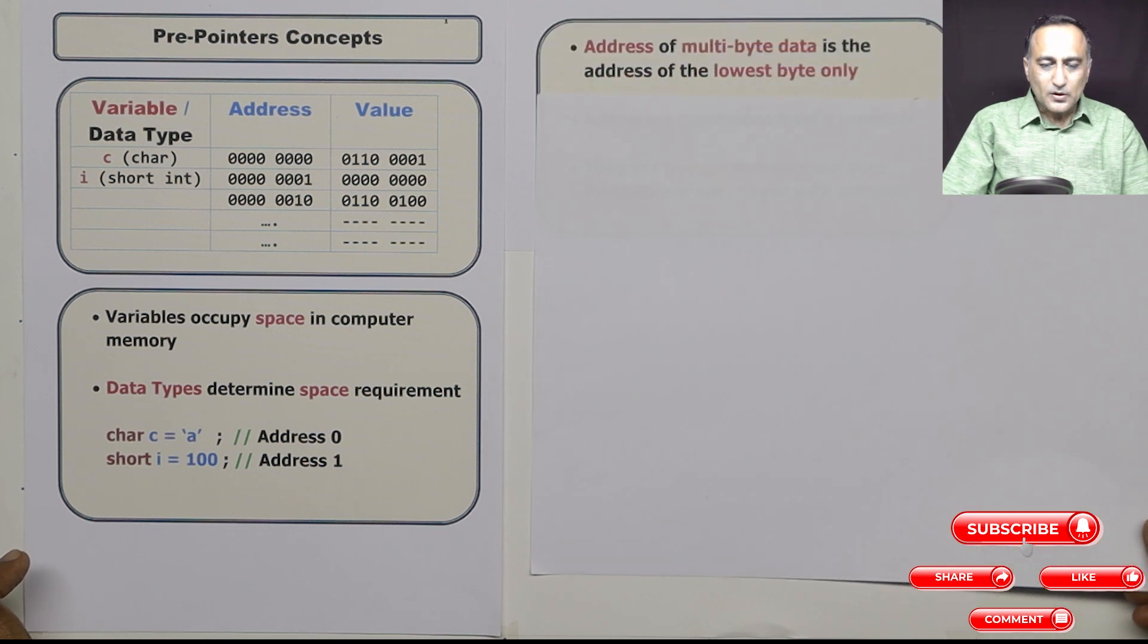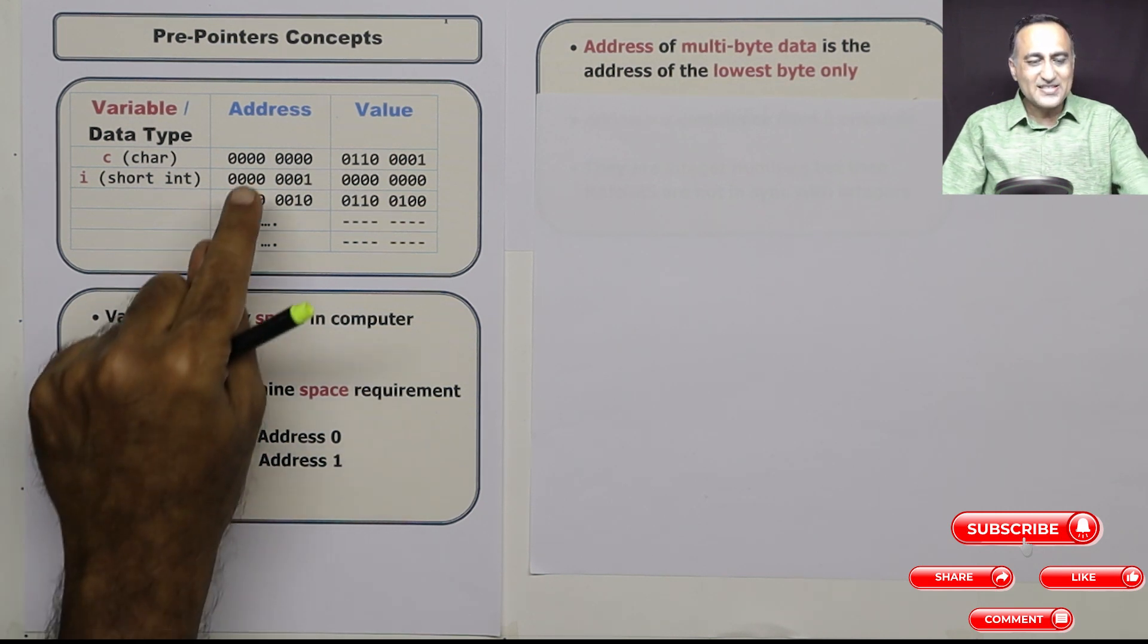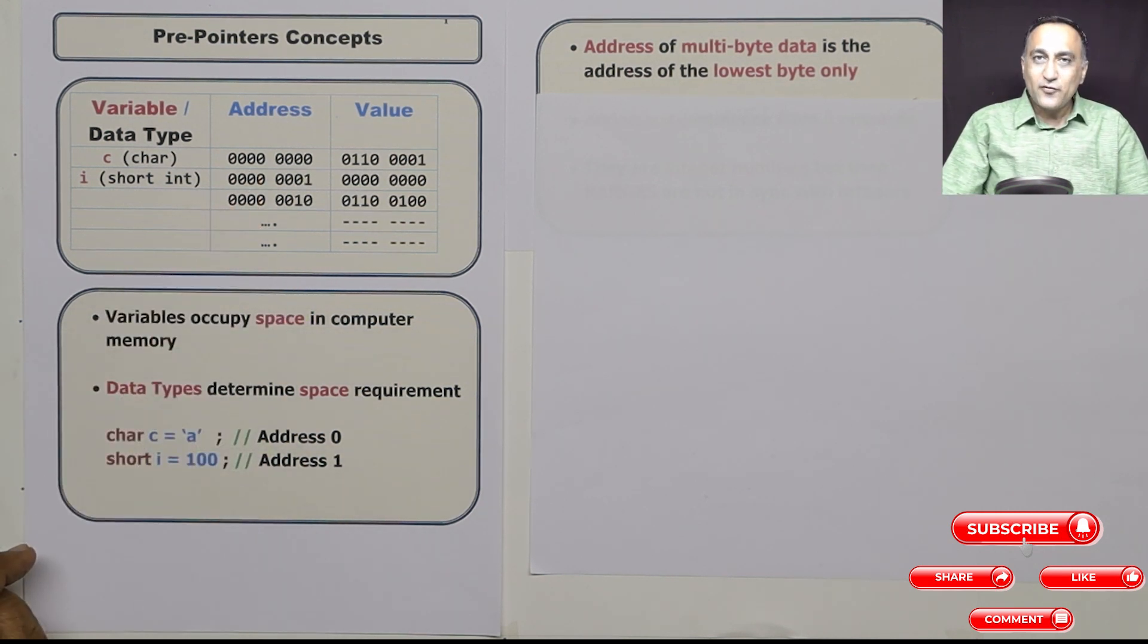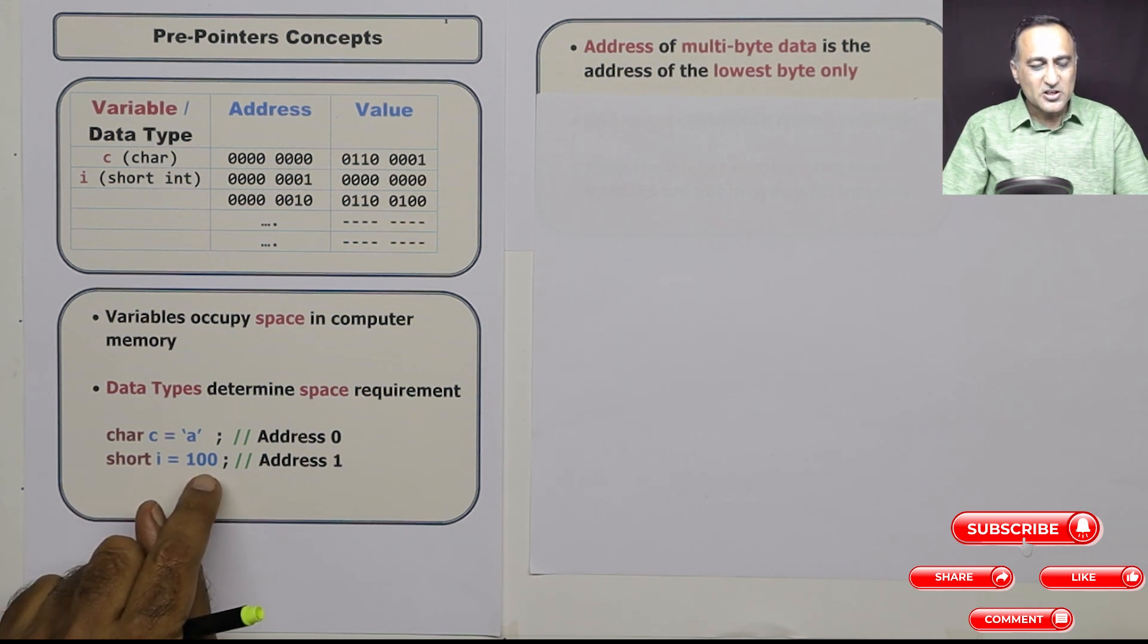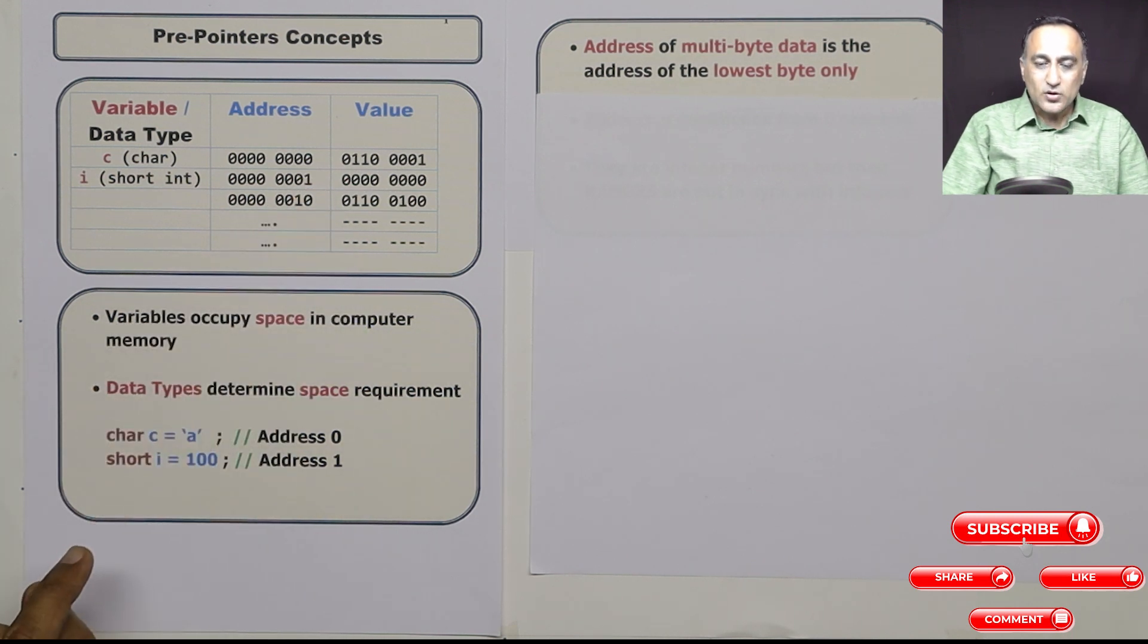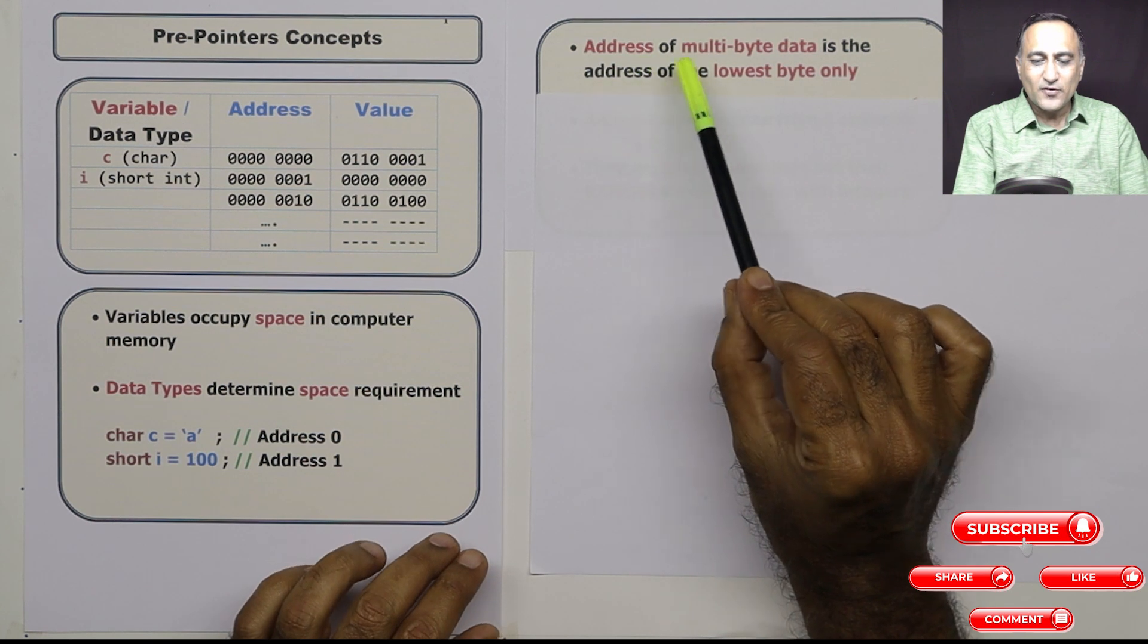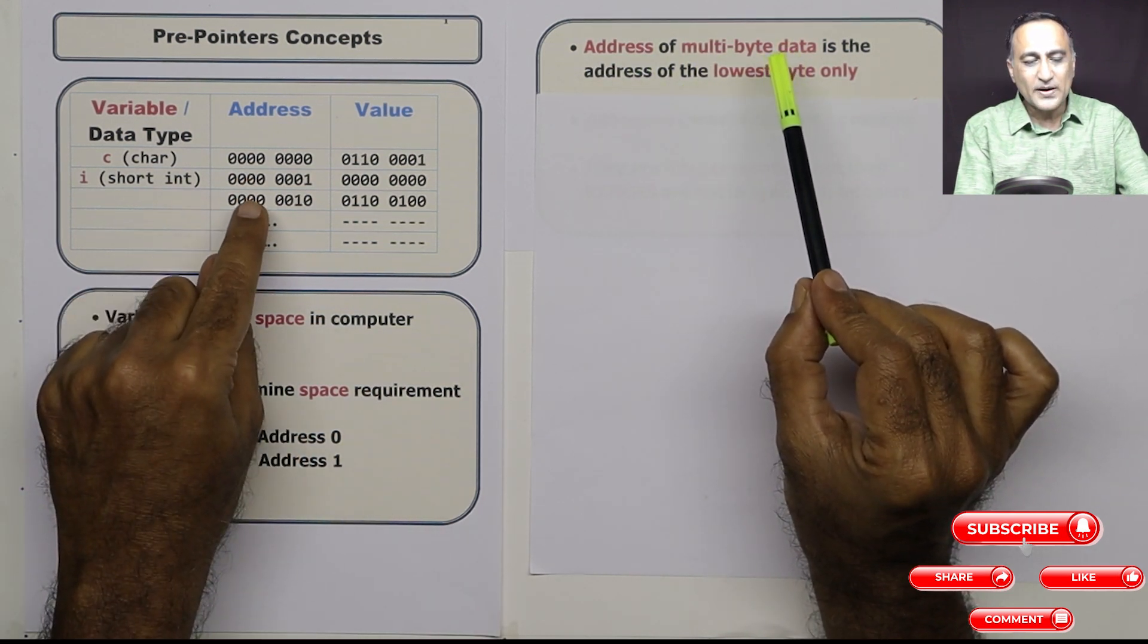Now, if you ask me what is the address of character with the initial value A, I will say the address is zero. And if you ask me what is the address of the integer variable i with the initial value 100, I will say its address is one. So the important point here is, in case of multi-byte data, see integer is represented in more than one byte.